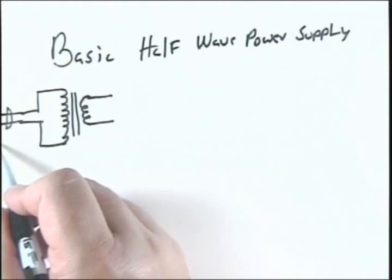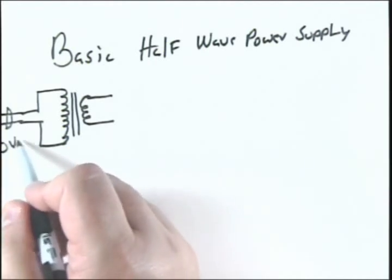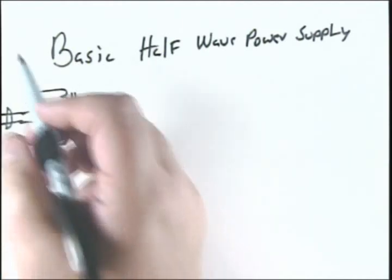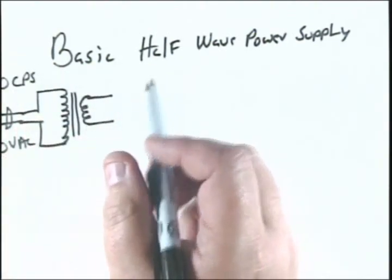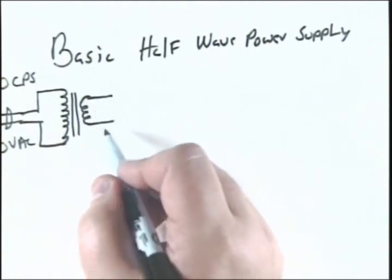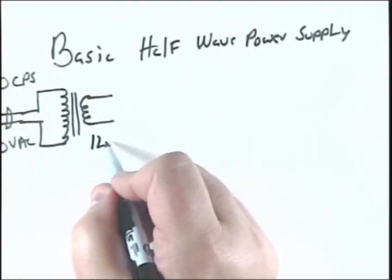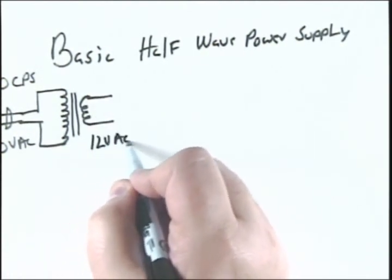This is 110 volts AC and it's 60 CPS, cycles per second. We're stepping it down, so this side is going to be 12 volts AC.